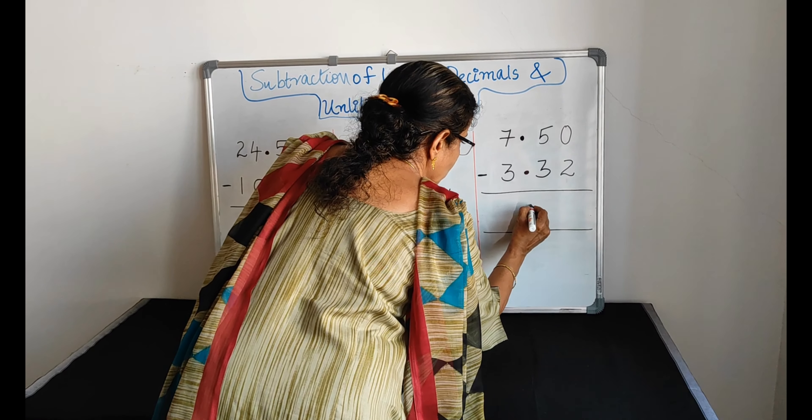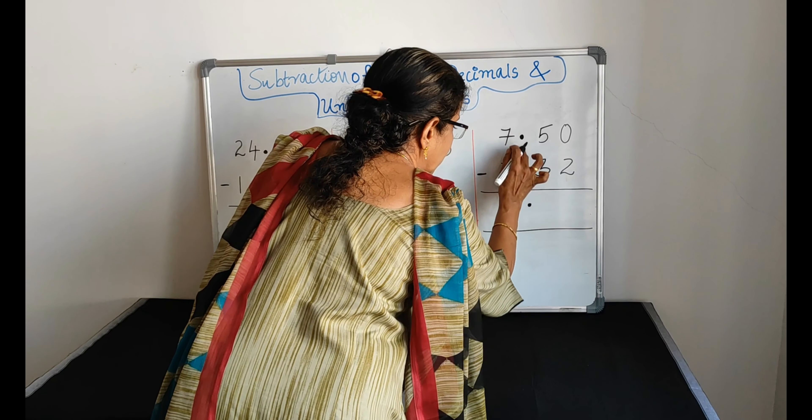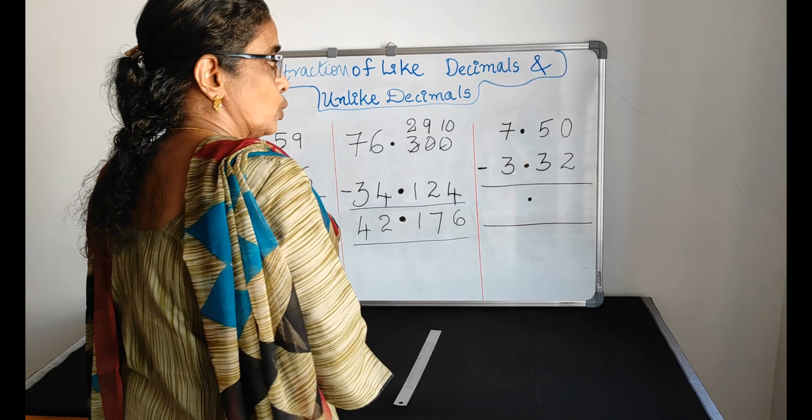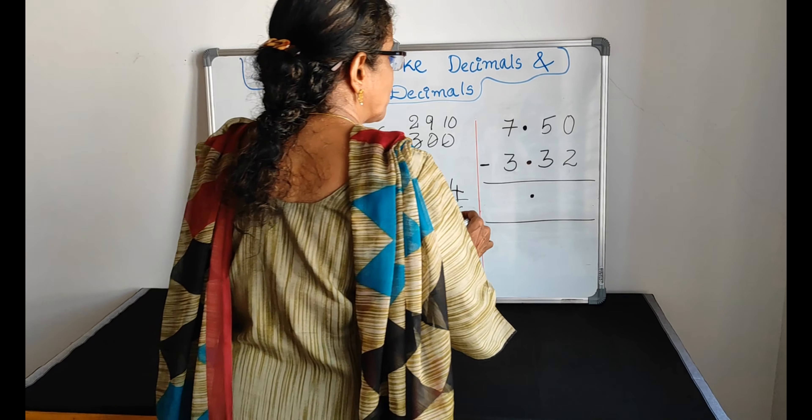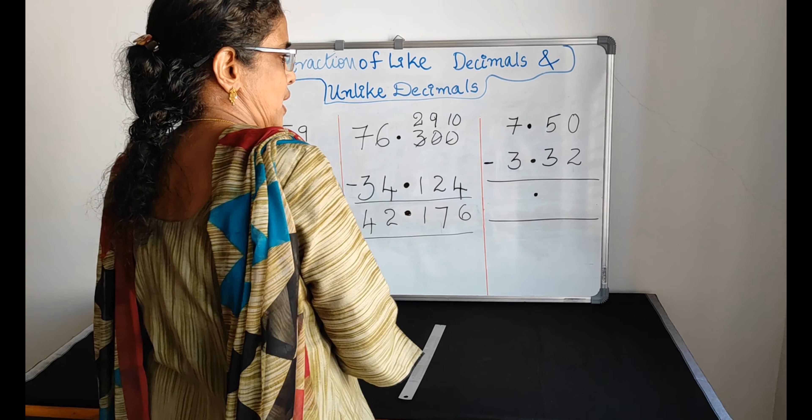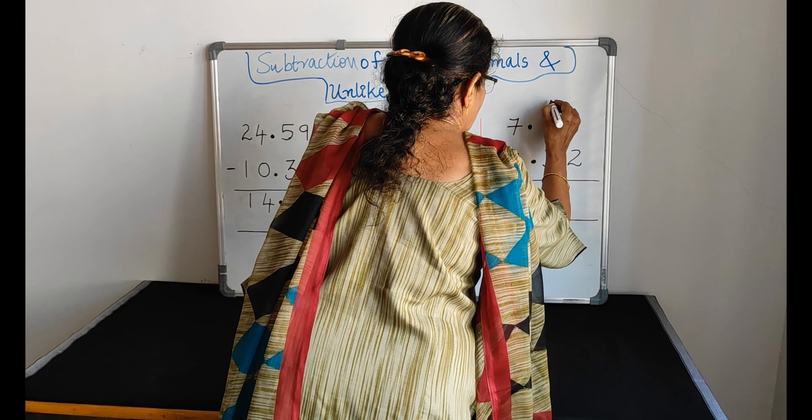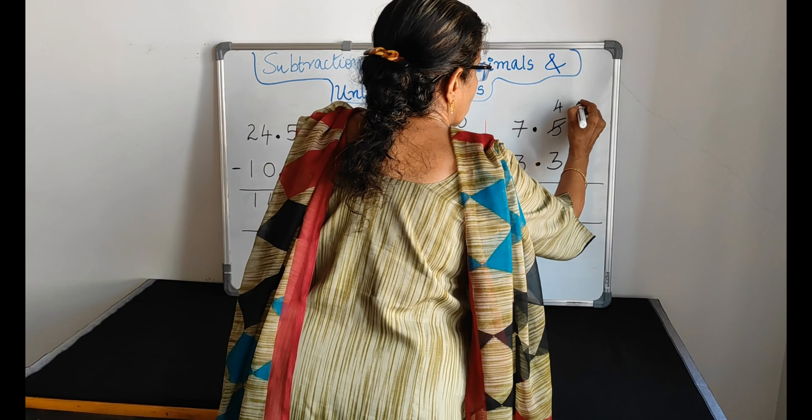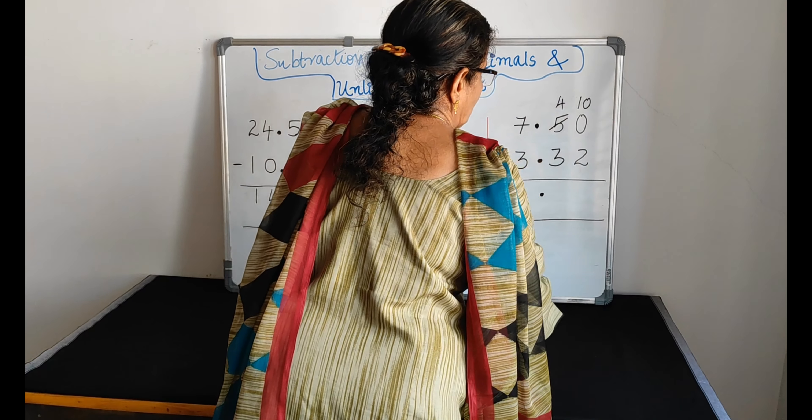Now we have 7.5 minus 3.32. Here they are unlike decimals. Make it like. Here we have 2 digits after the decimal dot. Now here also 2 digits after the decimal dot. So now they are like.